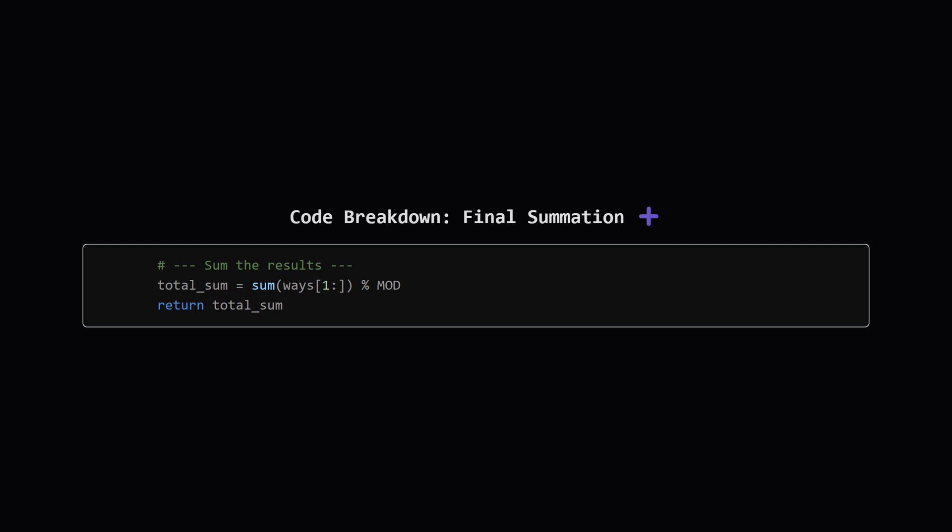And the last step is simple. We just sum up all the values we calculated in the ways array from index 1 up to maxValue. Remember to take the final sum modulo MOD as well. This gives us the total count of all possible ideal arrays.